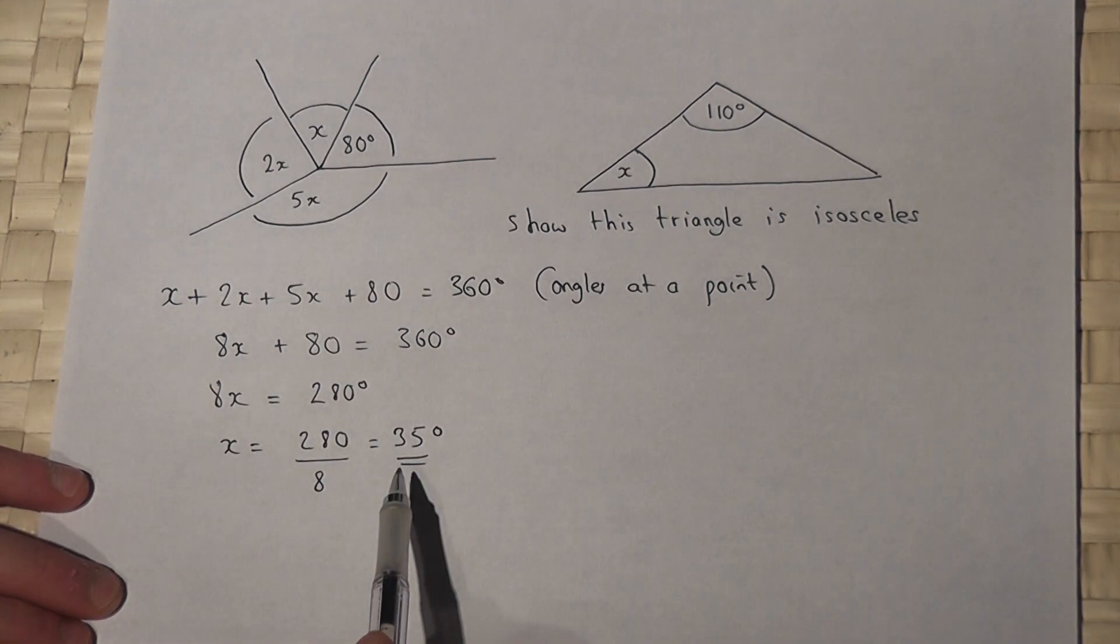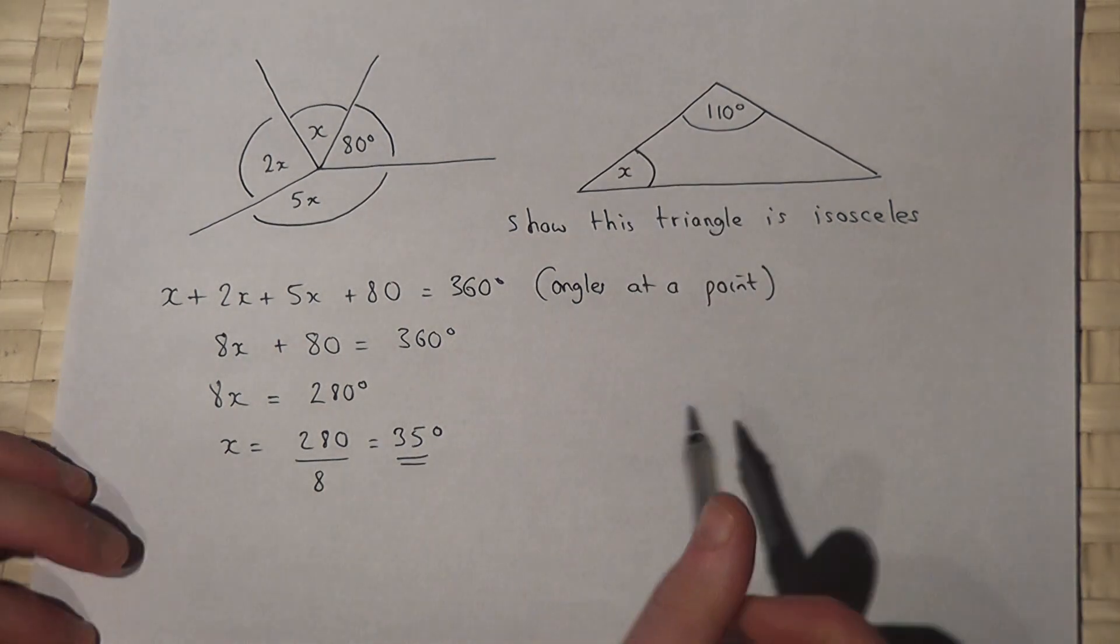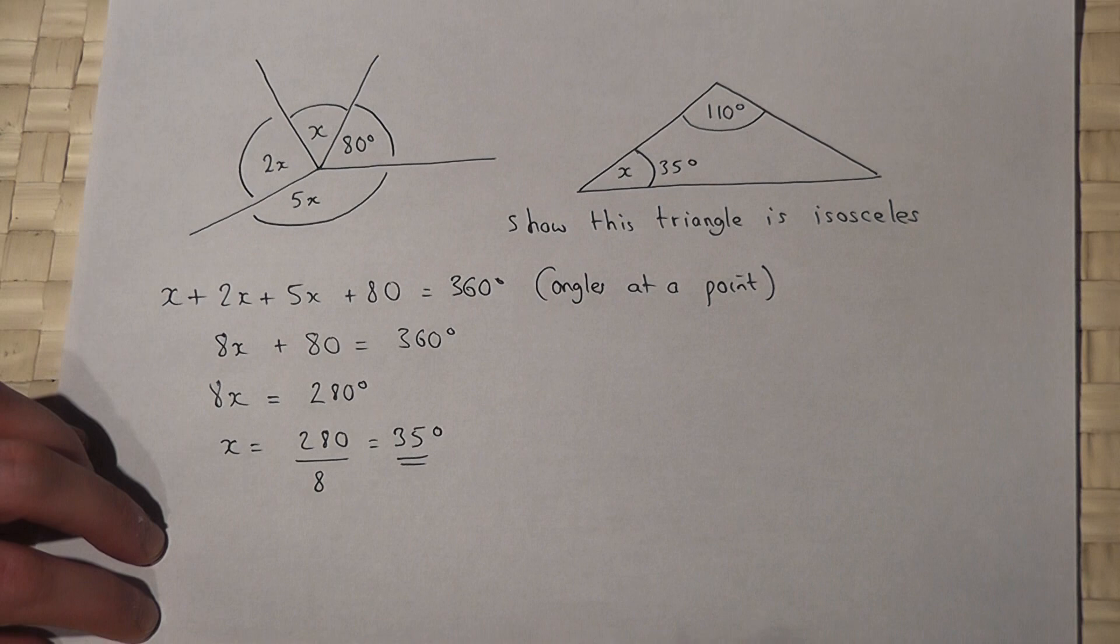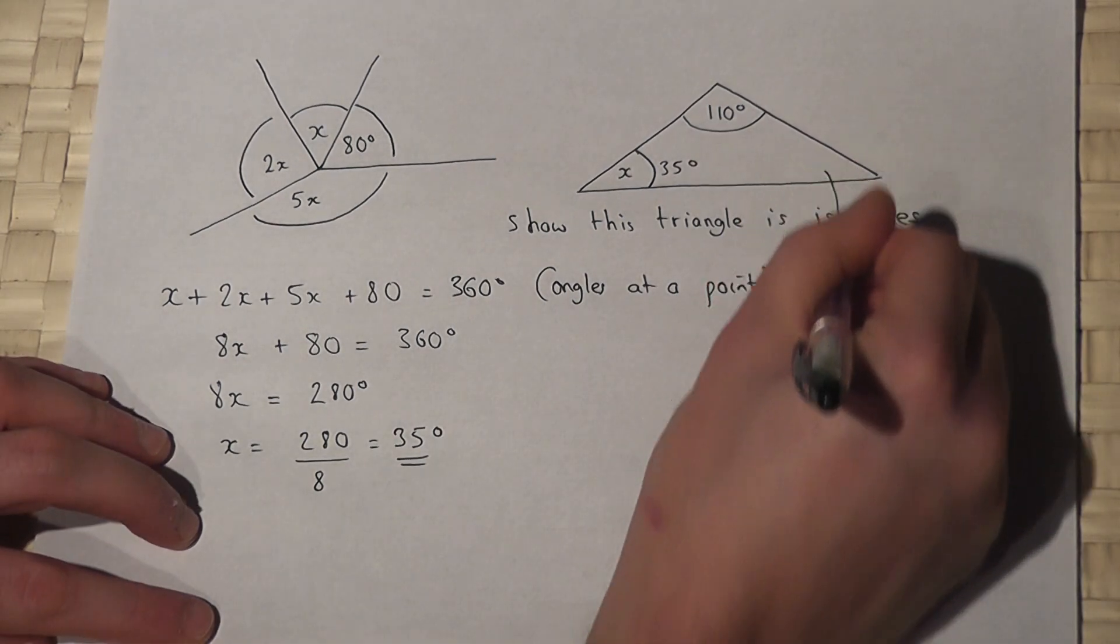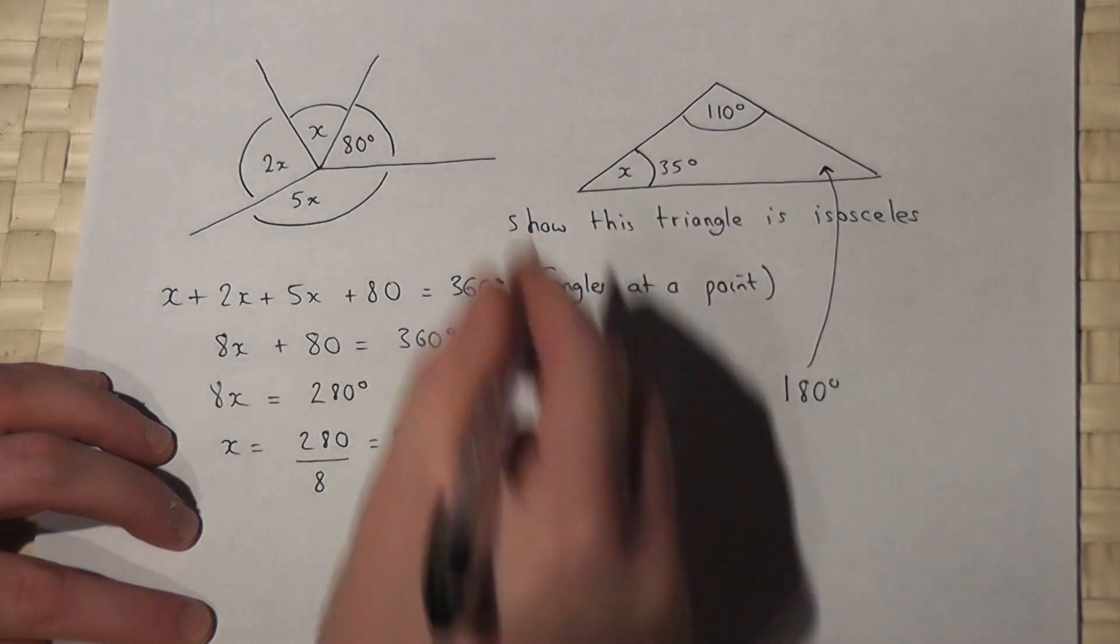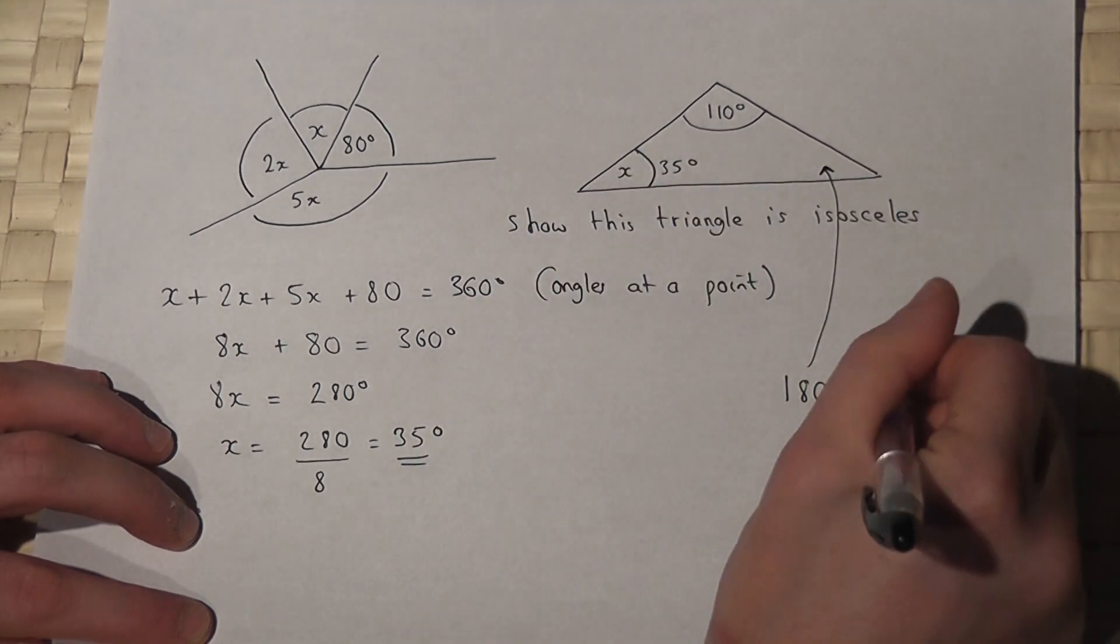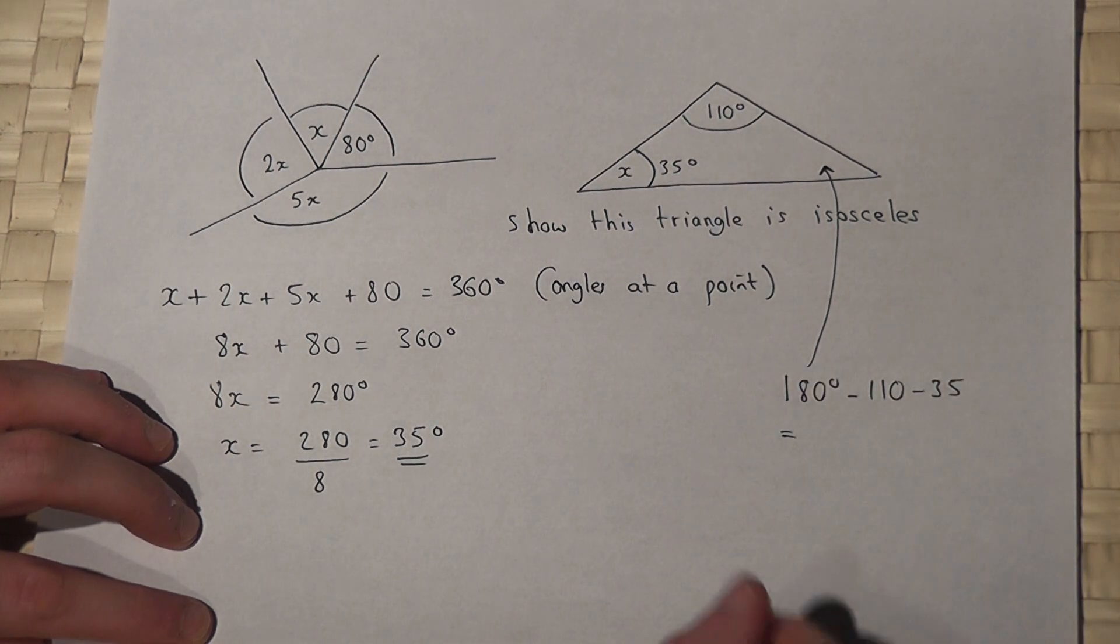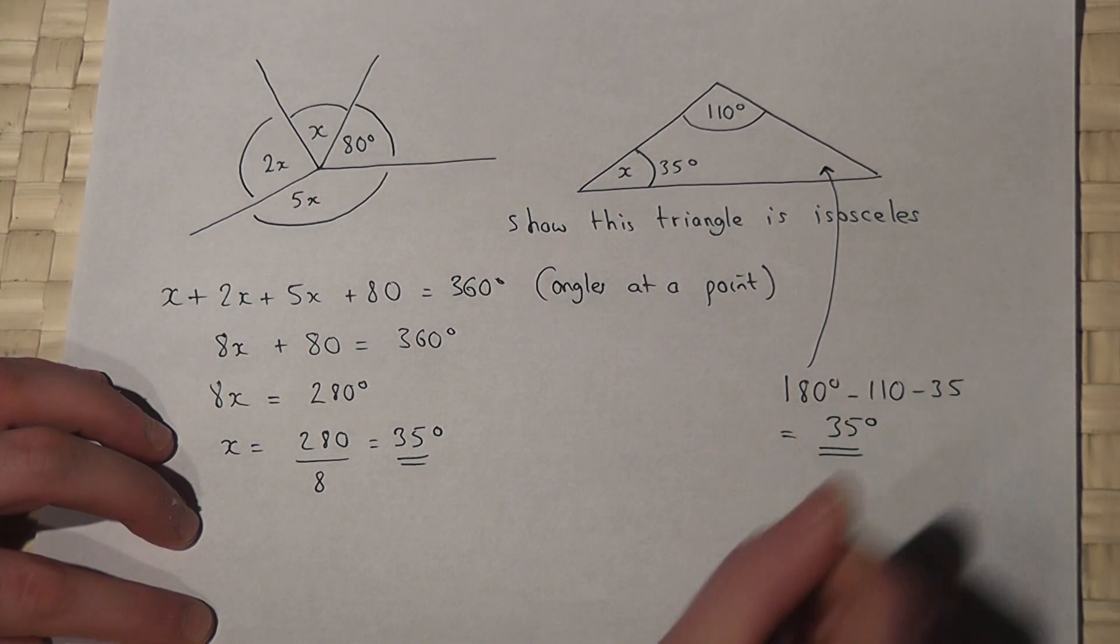So if X is 35 degrees, this angle here must be 35. So here we have 35 degrees. But this angle here therefore must be 180 for the full triangle minus 110 minus 35, which if you work that out is also 35 degrees.